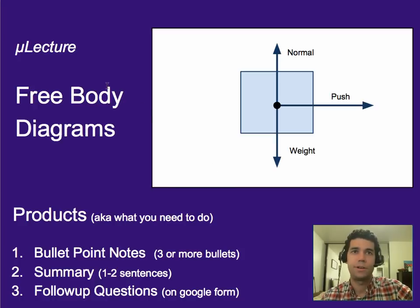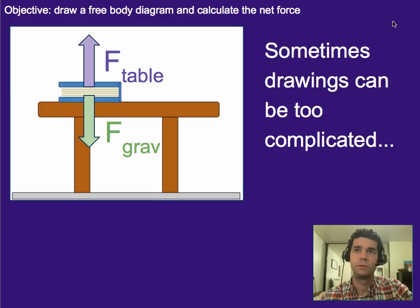Hello, and now we're going to work on another Michael lecture. This one's going to be on free body diagrams. So in other words, how do we draw things with forces on them in a way that doesn't take up a bunch of time. As always, three or more bullet points worth of notes, a one-to-two sentence summary, and follow-up questions are the products you need to do.